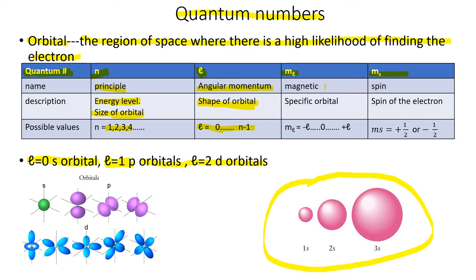The next quantum number is the magnetic quantum number, m-sub-l, which identifies the specific orbital you're dealing with. The possible values for m-sub-l depend on l — they range in integers from negative l through zero to positive l. If you have l equals zero, the only possible value for m-sub-l is also zero, meaning there is only one specific orbital — which is why there's only one s orbital.